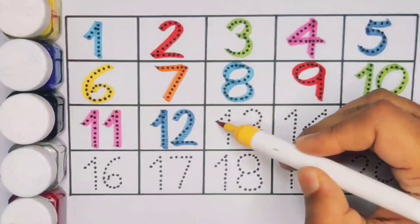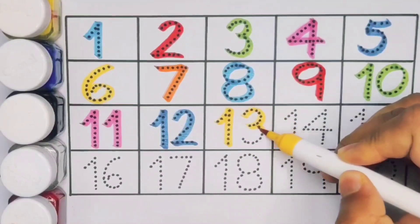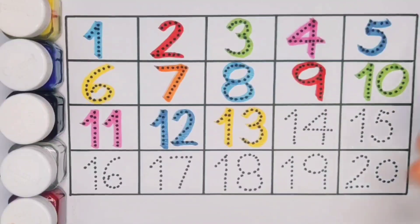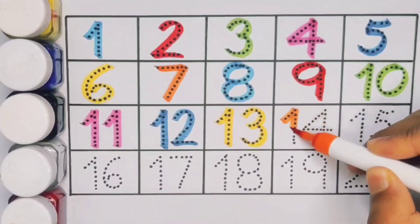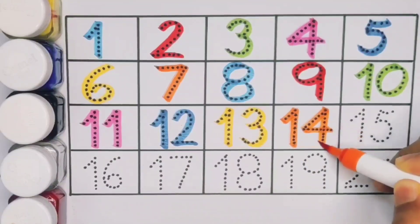Next kids 13, 1, 3, 13, number 13. Next kids 14, 1, 4, 14, number 14.